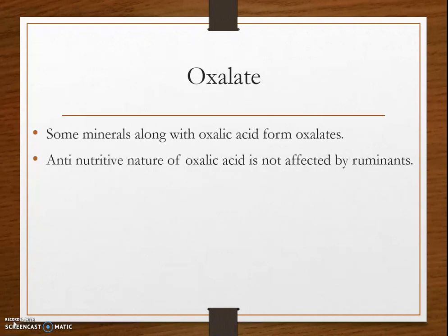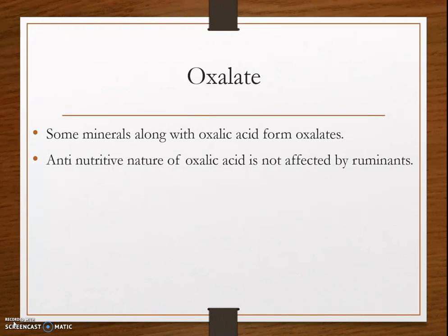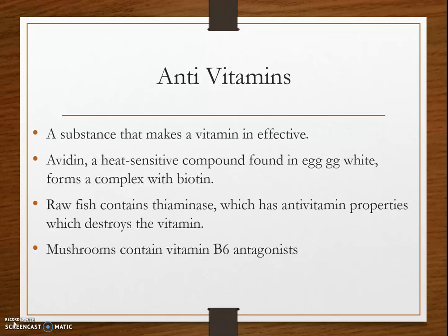Oxalates are formed when some minerals combine with oxalic acid. The anti-nutritive nature of oxalic acid has minor significance in ruminants. Minerals such as magnesium, iron, and calcium form insoluble salts with oxalic acid, creating mineral oxalates. These oxalates have an anti-mineral nature and cause irritation in the guts of animals.